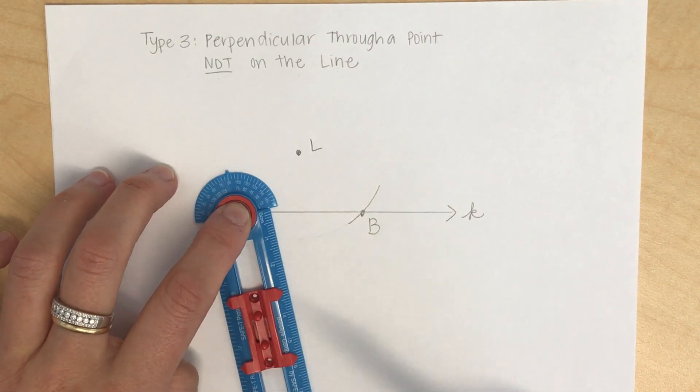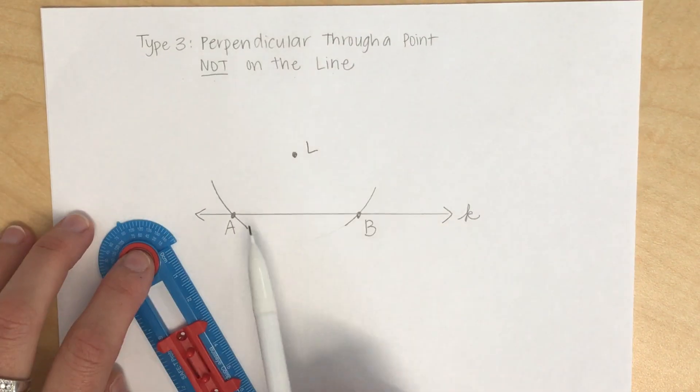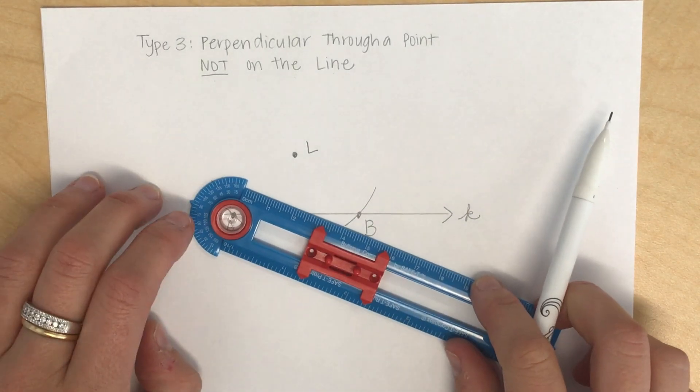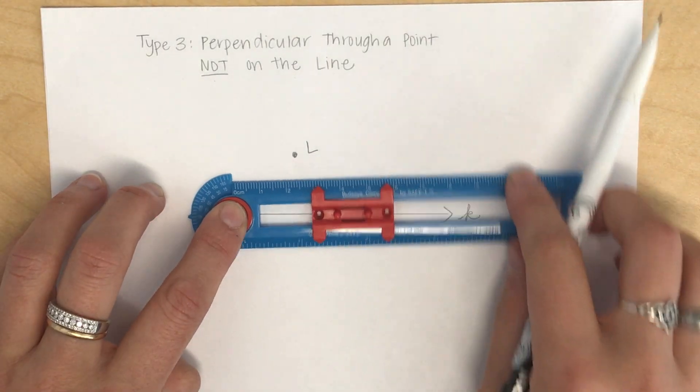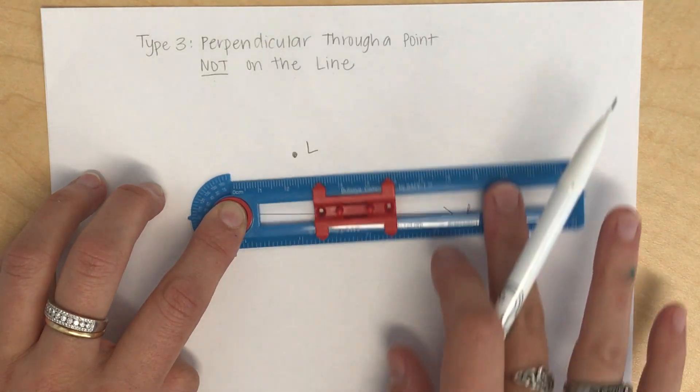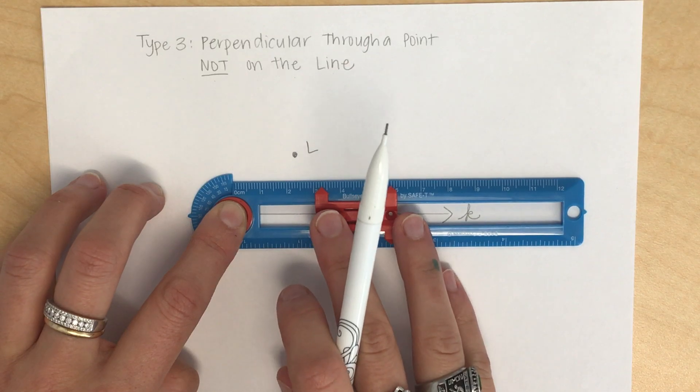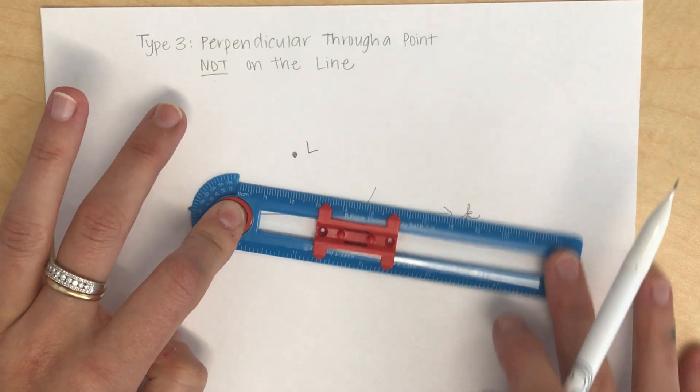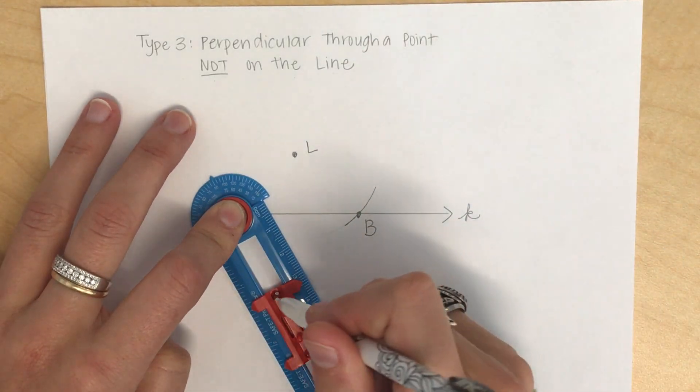I'm now going to adjust my radius so it's more than half of the length of AB. So halfway is about here in the center. I want mine to be more than halfway. So here's halfway, here's a little further. I was already kind of there anyway. A little further than halfway. I'm going to draw an arc down below.